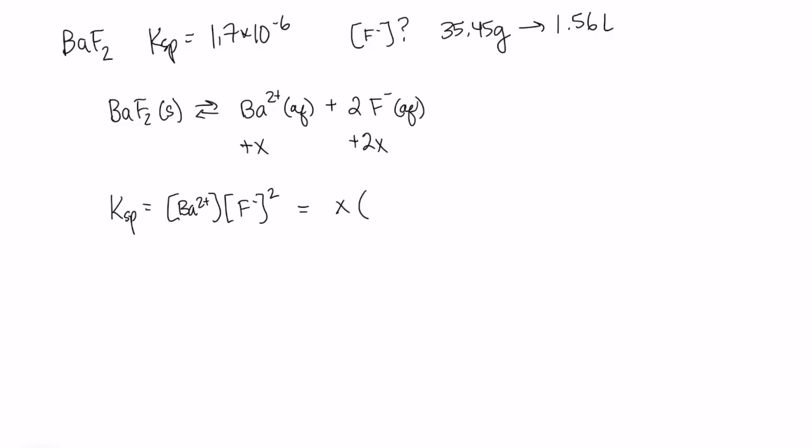So if we substitute in, we get x times 2x squared, which is 4x to the third. And that equals our Ksp, 1.7 times 10 to the minus 6.